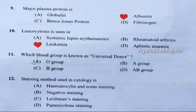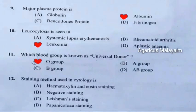Eleventh question: Which blood group is known as universal donor? Correct answer is Option A: O group.